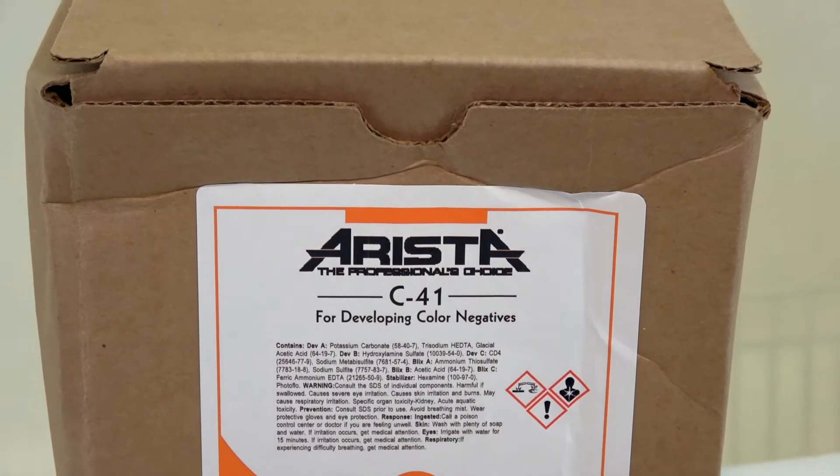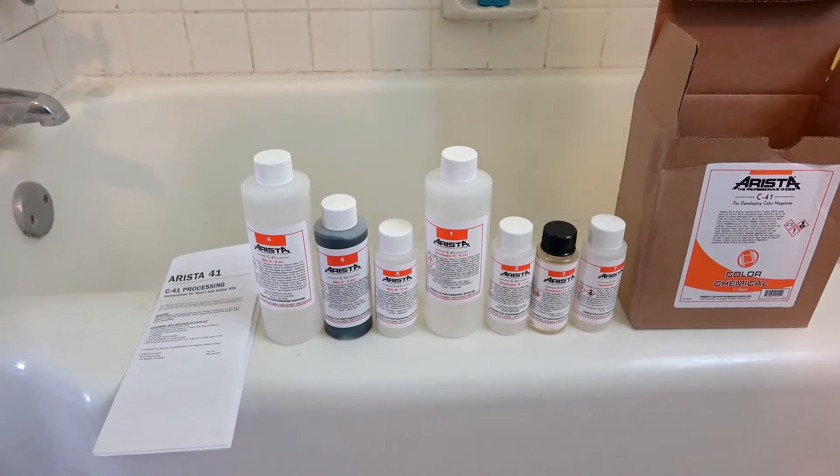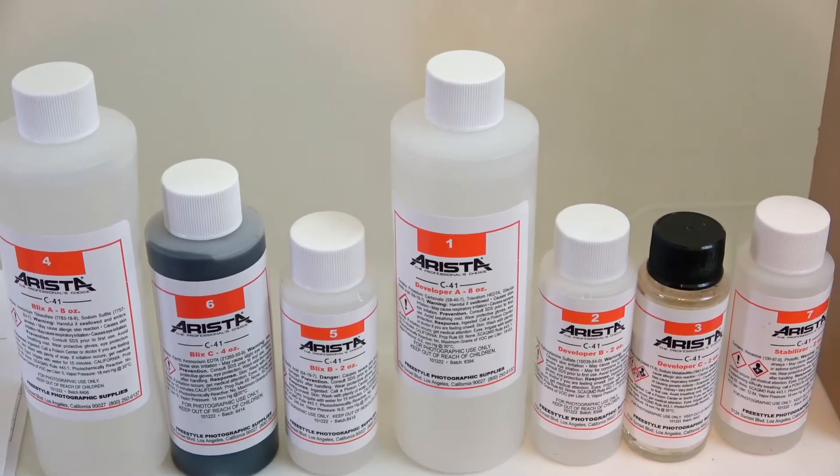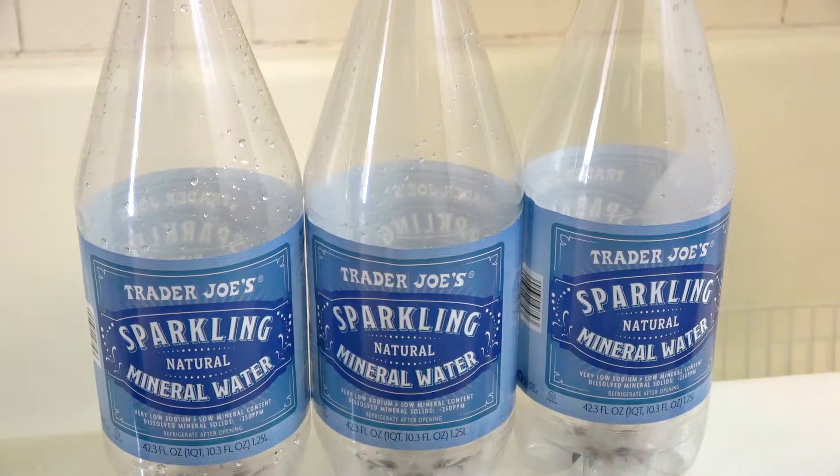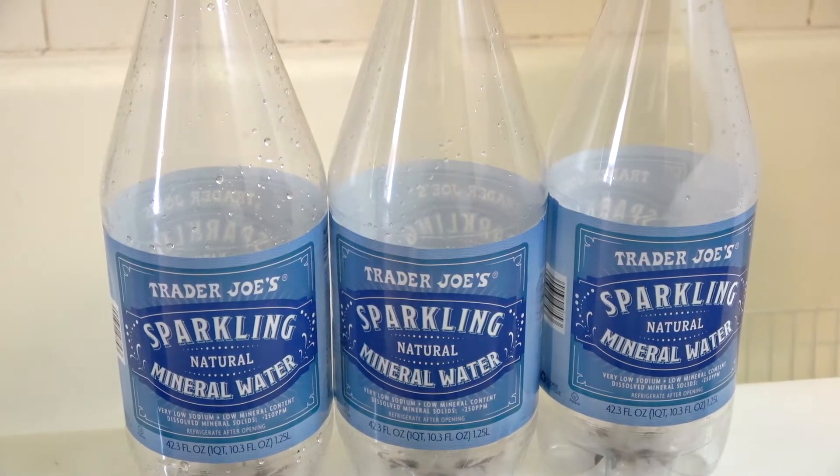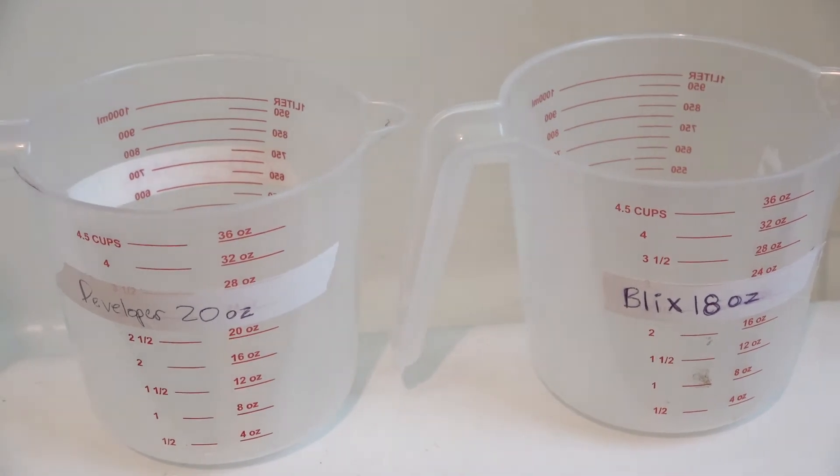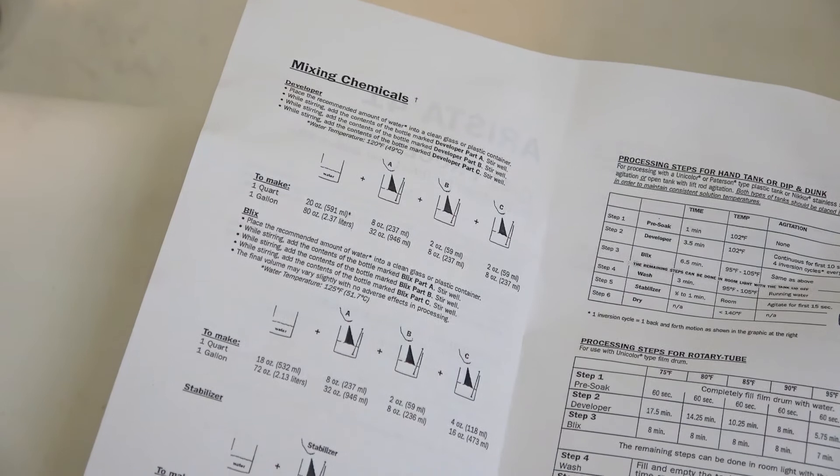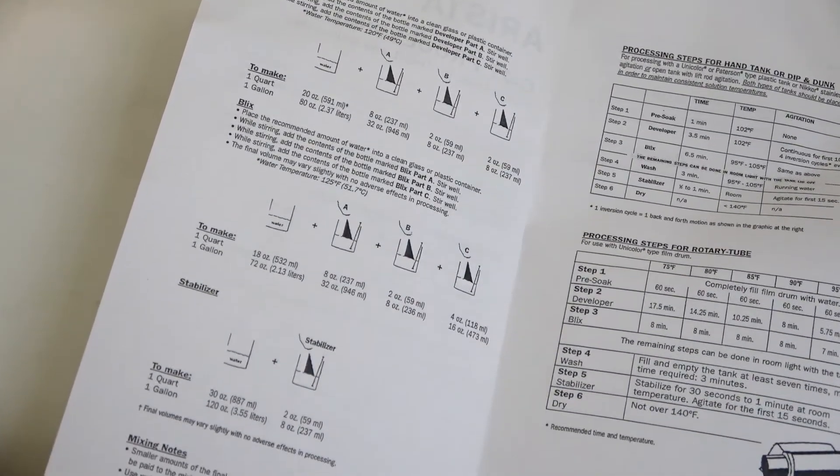I use the Arista C41 and E6 development kits. I get the liquid over the powder just because I feel like it's easier to mix. I mix these into Trader Joe's sparkling water bottles. I find that these are just the perfect size, and I'll mix them up in a couple measuring cups that I got from Walmart for really cheap. Your development kit comes with instructions, so I highly suggest that you use these.